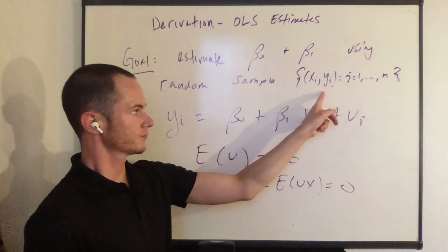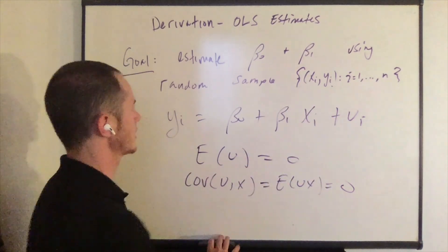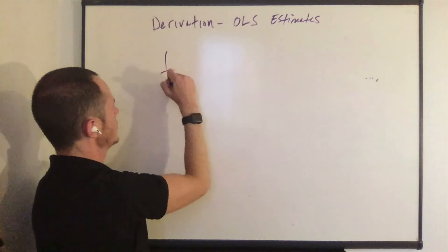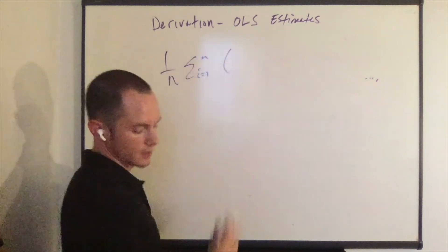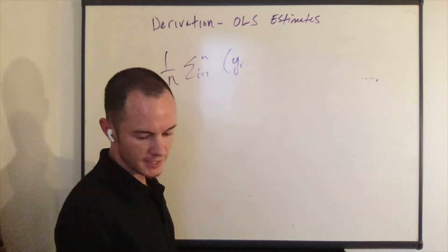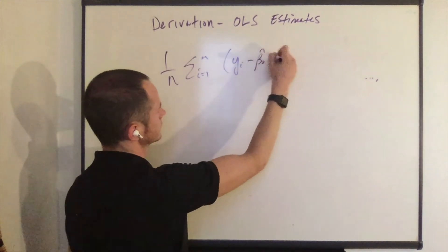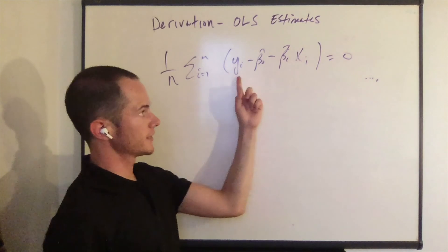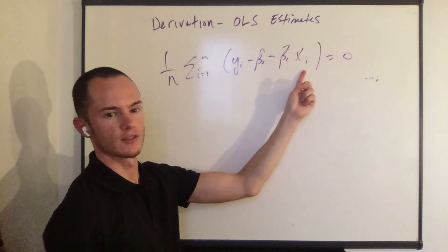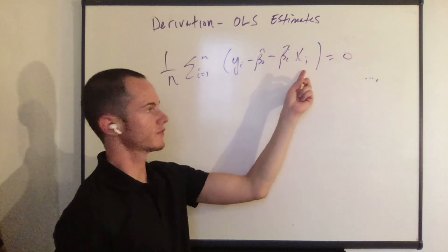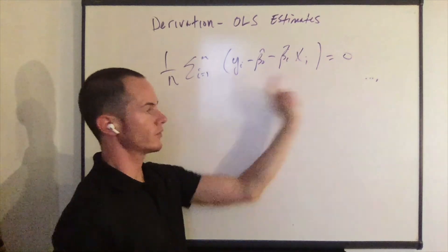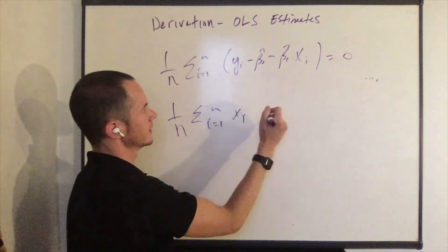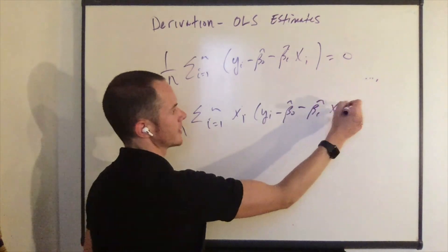Now we're using a sample of data to come up with these estimates, so we need to replace these population moments with their sample counterparts. The sample counterpart for the first moment is: one over n times the sum from i equals one to n of y_i minus beta naught hat minus beta one hat times x_i, equals zero. The sample counterpart for the second moment is: one over n times the sum from i equals one to n of x_i times y_i minus beta naught hat minus beta one hat times x_i, equals zero. We put hats on beta naught and beta one to represent that these are sample estimates of the population parameters.